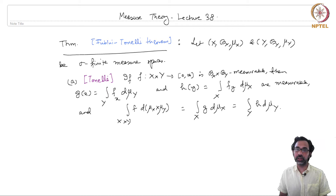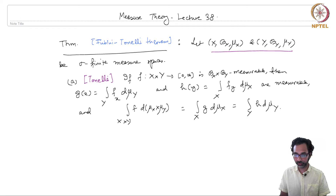Finally we come to the theorems of Fubini and Tonelli. We fix two sigma finite measure spaces, x and y, which are both sigma finite, and so the theorem of Tonelli is as follows.